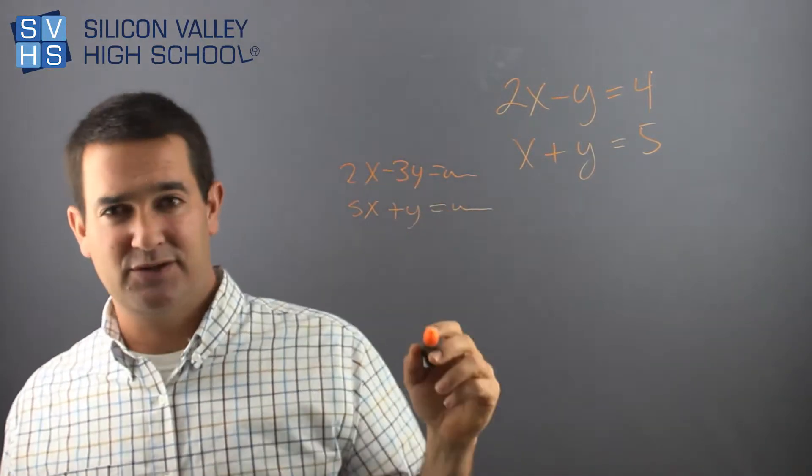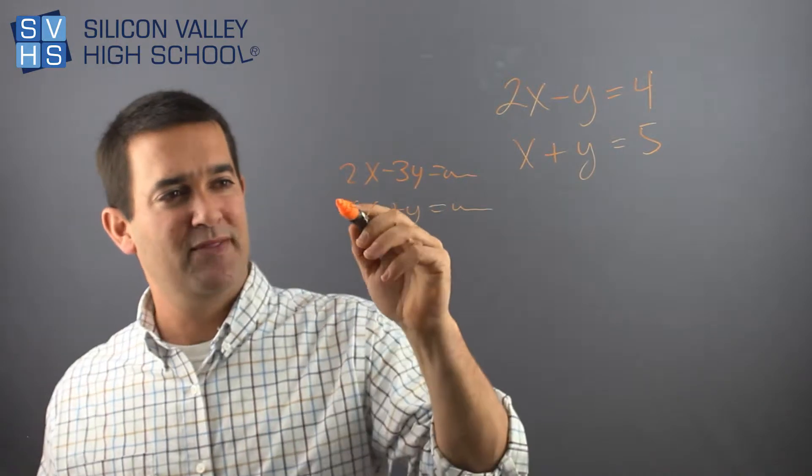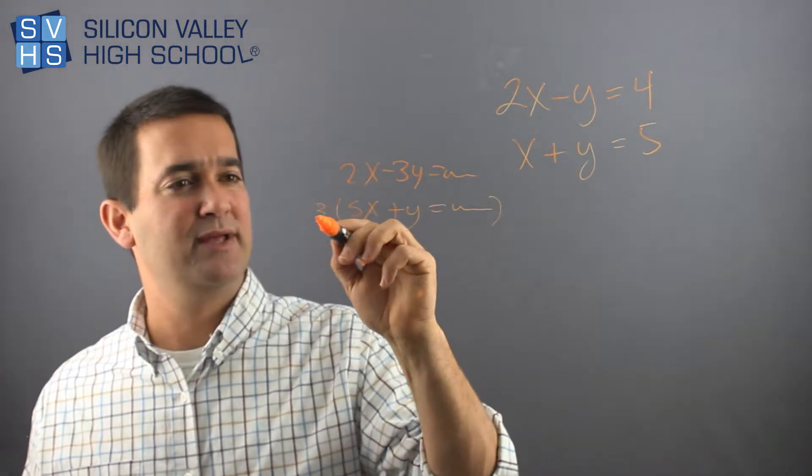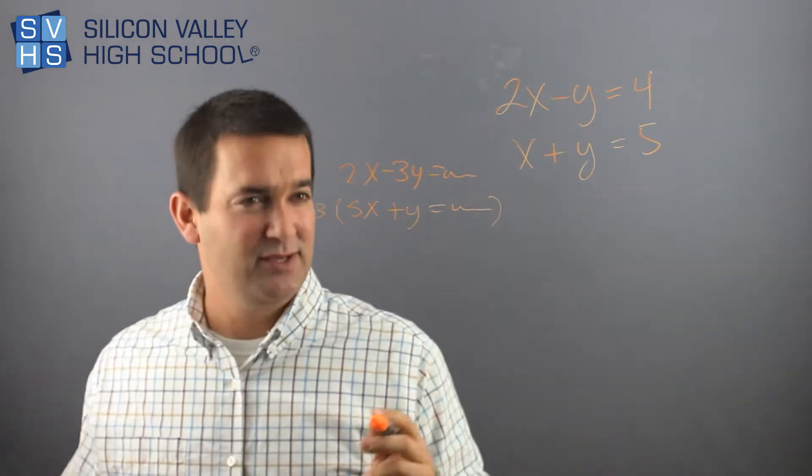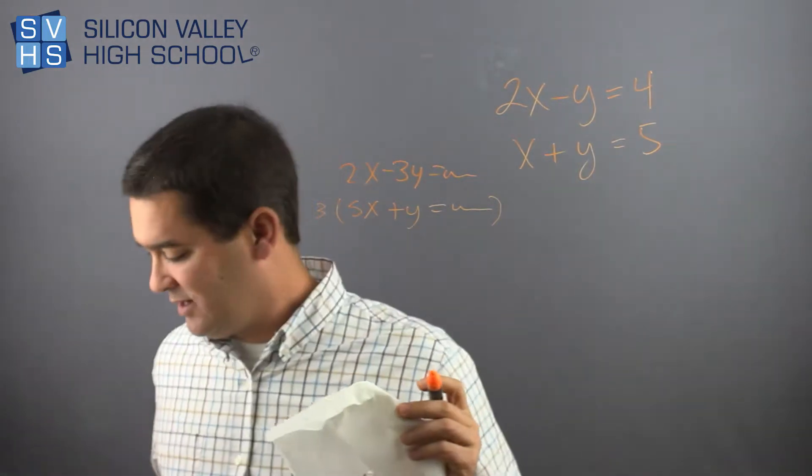If you wanted to cancel your Y's, they don't cancel right now. You would multiply the whole bottom problem by 3, which would result in a 3Y. Now they cancel. So you're probably used to having to manipulate problems for the addition method to work.